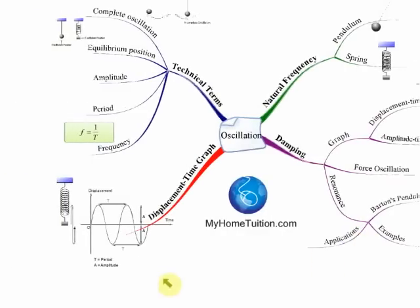Last but not least, you need to know the displacement-time graph. The displacement-time graph is a graph about oscillations. This is an example of a displacement-time graph, and from here we can see that the graph looks like a wave but it is not a wave — this is a displacement-time graph, a graph of oscillations.